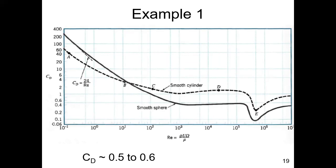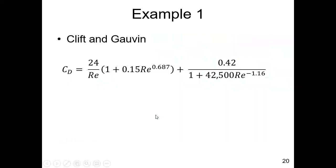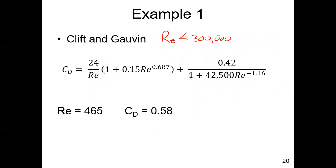We could go to the diagram at Reynolds number 465 — between 10² and 10³ — and the drag coefficient looks to be between 0.5 and 0.6, which is the best resolution the figure allows. However, using the Clifton-Gauvin equation with Reynolds number less than 300,000 — which 465 satisfies — we calculate a drag coefficient of 0.58. That confirms the chart estimate of between 0.5 and 0.6, but provides much better accuracy. It is recommended to use the equation rather than reading the chart.